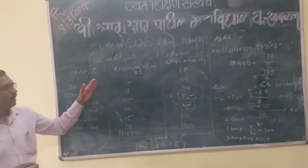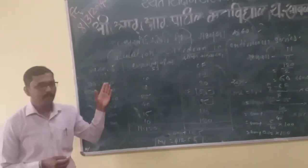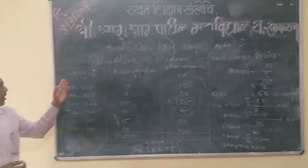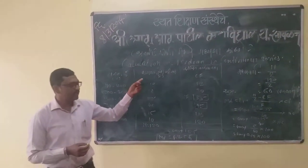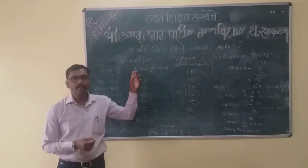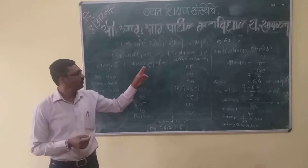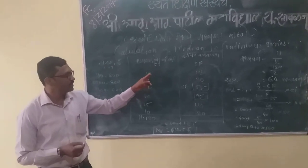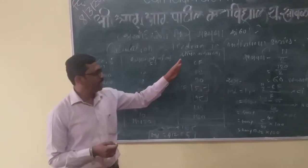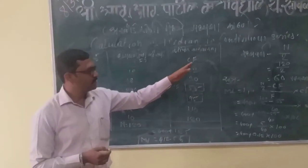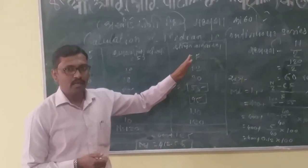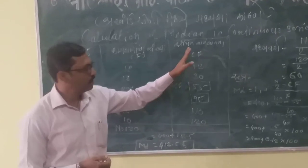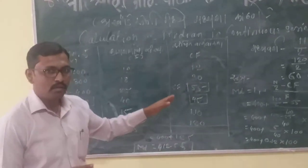This is the example. The first column is wages in rupees, the second column is number of workers, and then CF — cumulative frequency — we need this column.